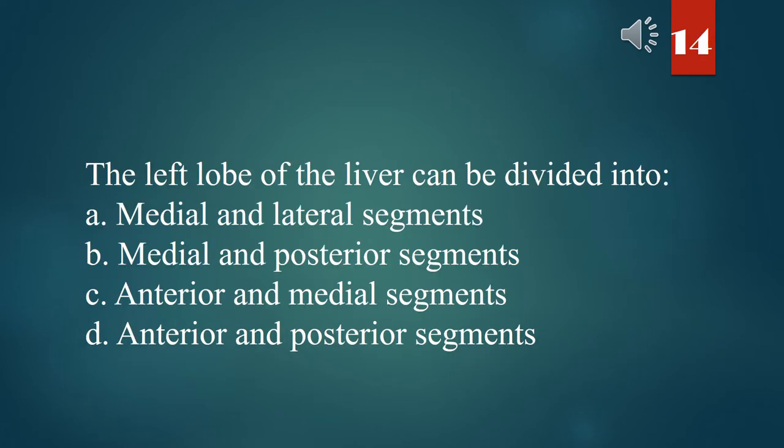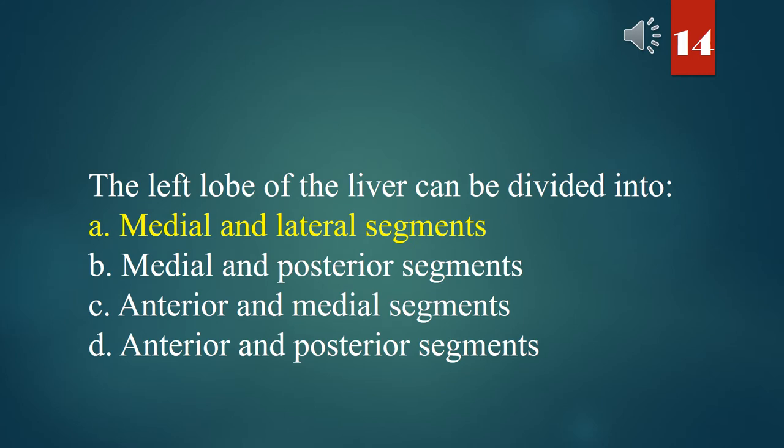The left lobe of the liver can be divided into: A. Medial and lateral segments. B. Medial and posterior segments. C. Anterior and medial segments. D. Anterior and posterior segments. The answer is A. Medial and lateral segments.